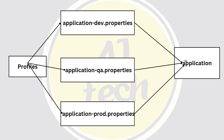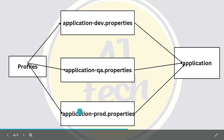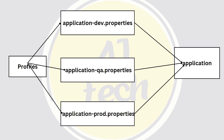If you want to manage environment-specific properties in your project, Spring Profile is best suited for that. For example, if your application is running in multiple environments like dev, QA, and production, there is a profile annotation you use. If running in the dev environment, it will pass the application-dev.properties file; if running in QA, it will use application-QA.properties; and if in production, it will use application-production.properties.